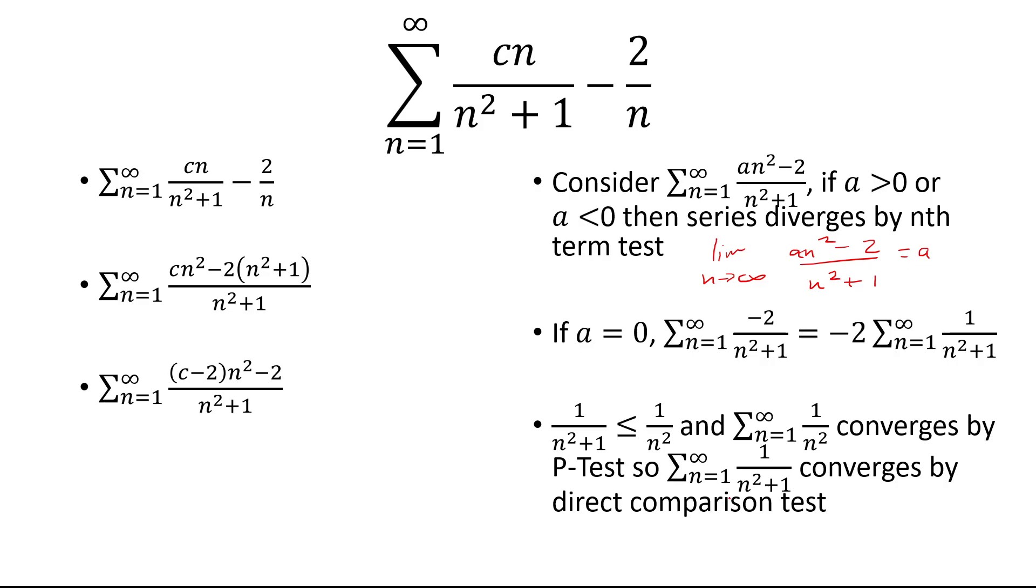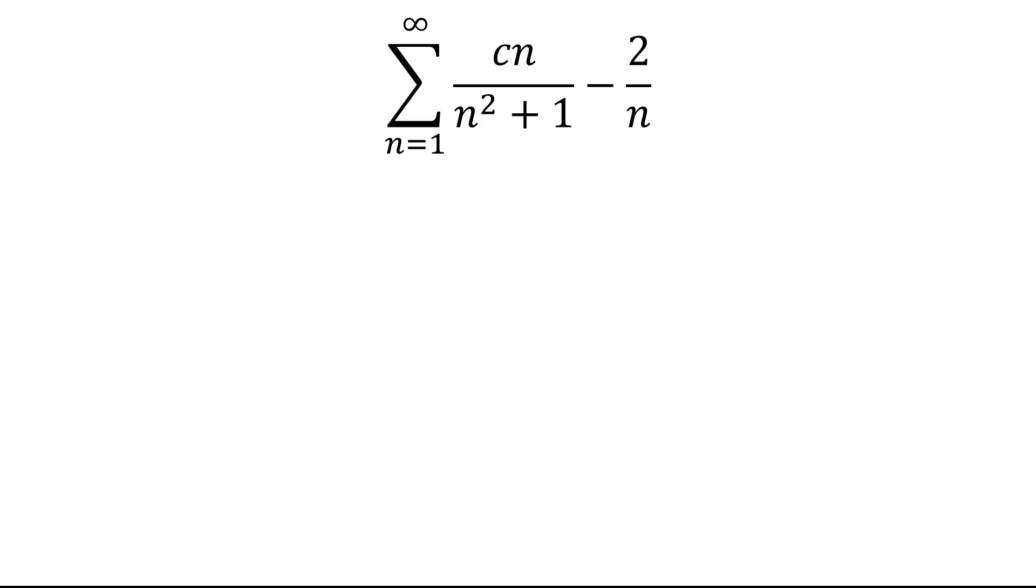And that's what the direct comparison test is telling us here. So if I multiply this by negative 2, that's also going to converge. So to sum it up, the sum only converges when a is 0.